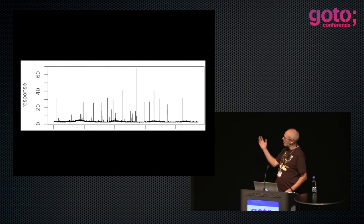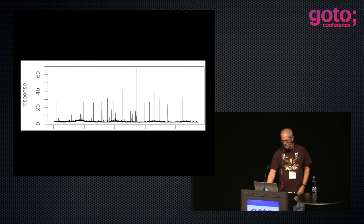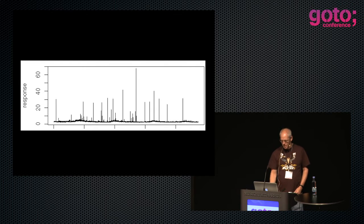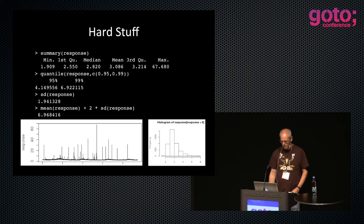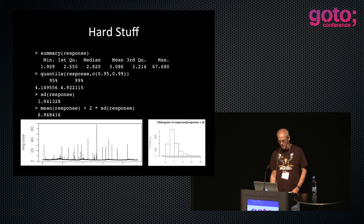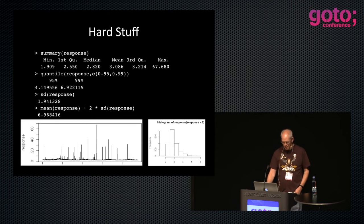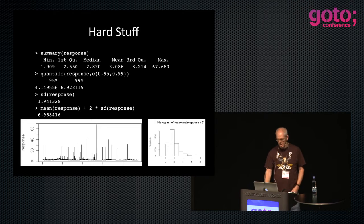So how would we summarize this response time? That's the hard part. Let's try summarizing it with a few different statistical methods. The mean is 3, which is sort of OK, but the max is 67. Then we have quantiles, response standard deviations, means, and two standard deviations. This is all hard stuff.